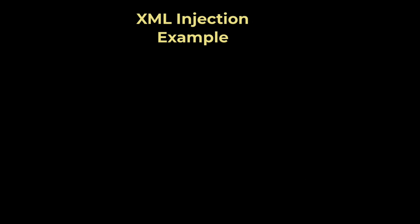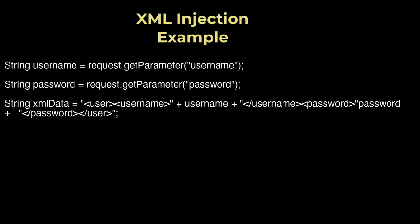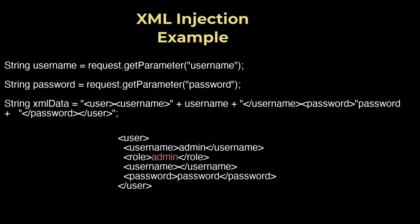Consider a web application that uses XML to store user information. The application takes user input from a form and constructs an XML document to store the data. The XML data string is constructed using user-provided input for the username and password fields. If the input is not correctly sanitized, an attacker can inject additional XML elements to manipulate the XML document. The resulting XML document includes an additional role element, which could be used to escalate privileges or gain unauthorized access to the system.